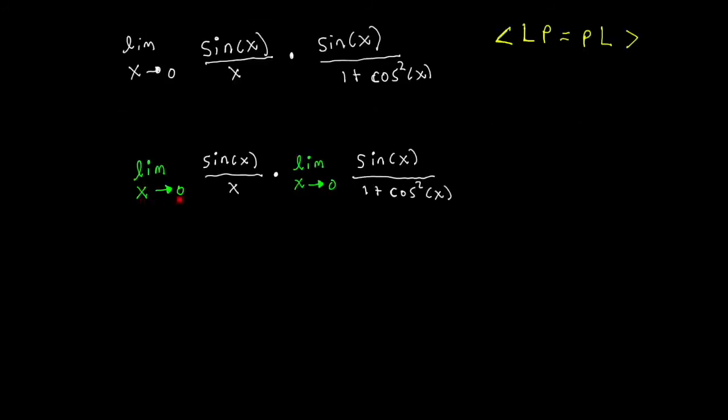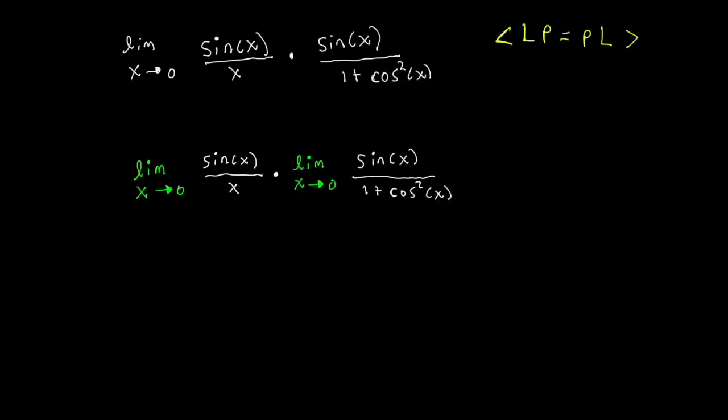And the limit as x approaches 0 of sine of x over x, that's a famous limit. It's going to go to 1. So here we can cross that out.